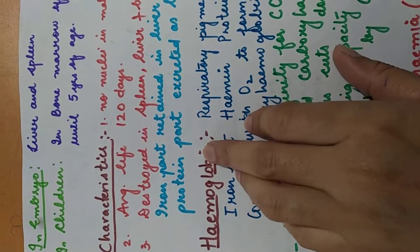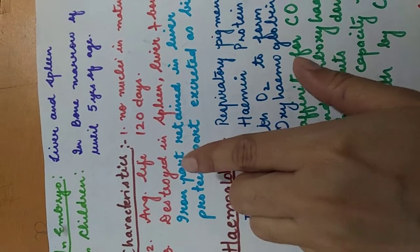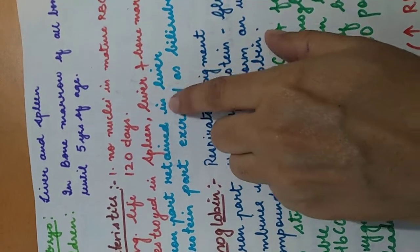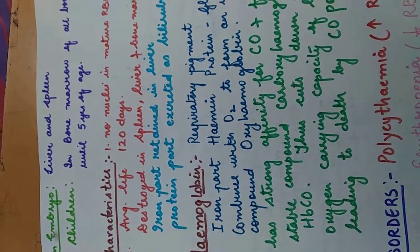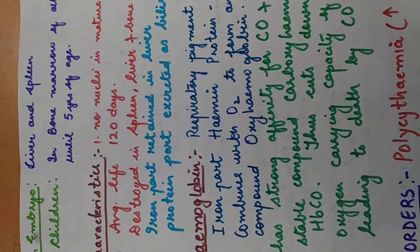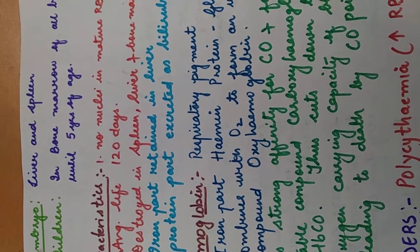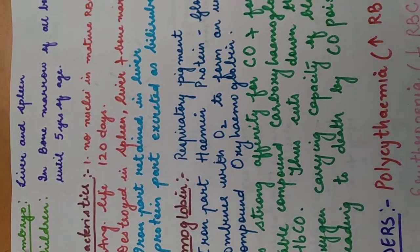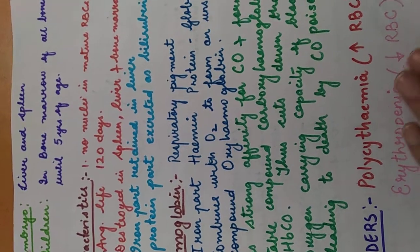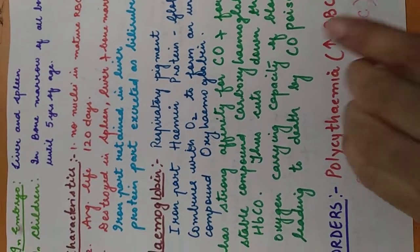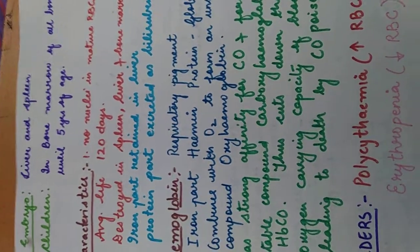Once they are destroyed or they are infected or they get weakened, they are destroyed in spleen, liver, and bone marrow. When the RBCs are destroyed, the iron-containing part is retained in the liver and the protein part is excreted as a bile pigment, bilirubin. We have discussed this bilirubin in our excretory system also.